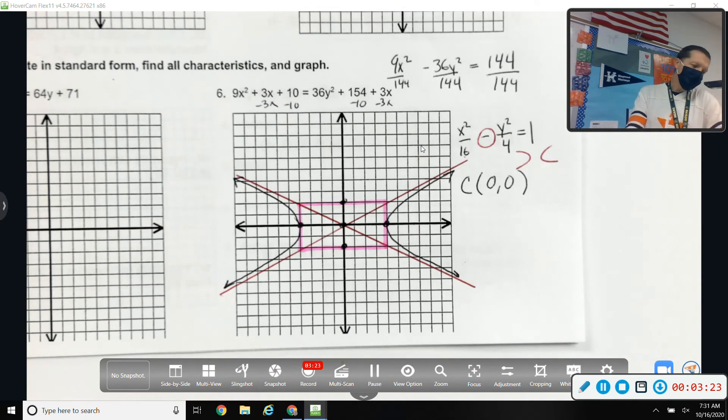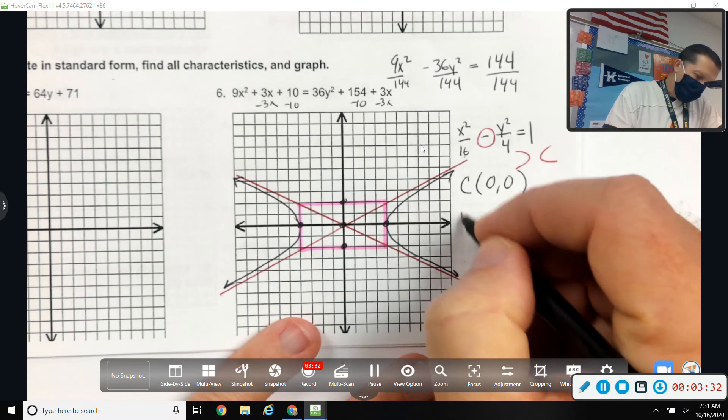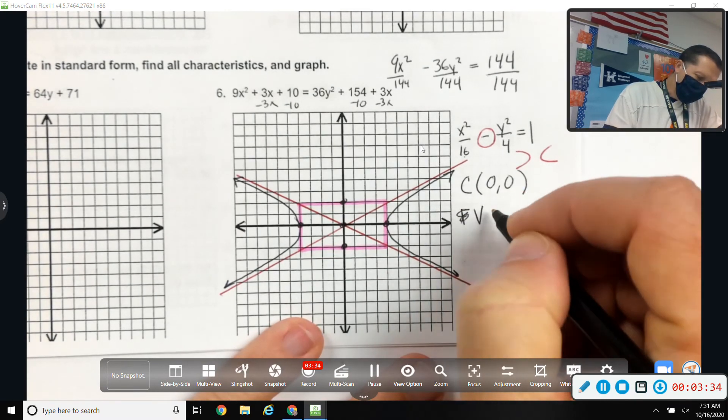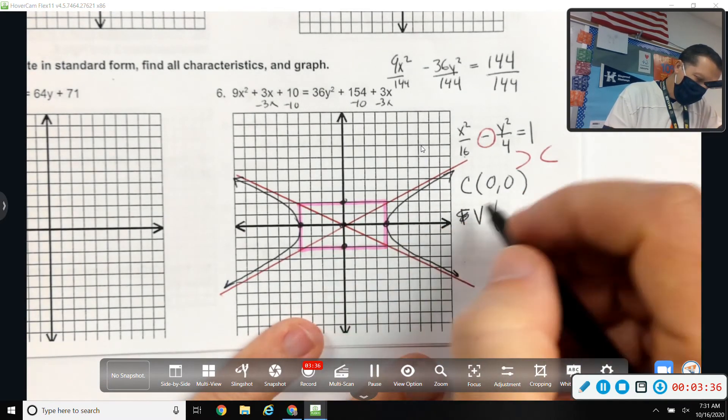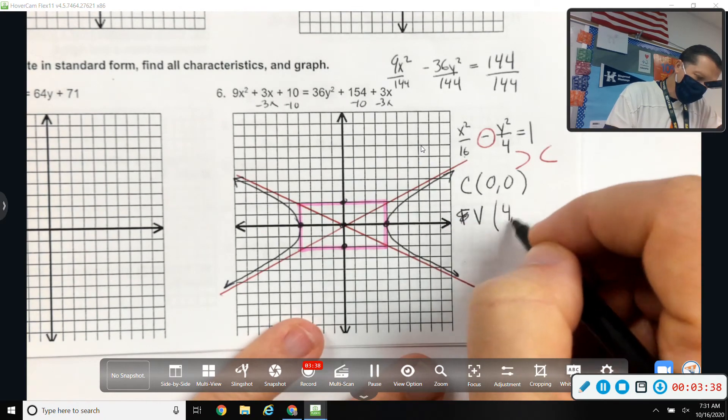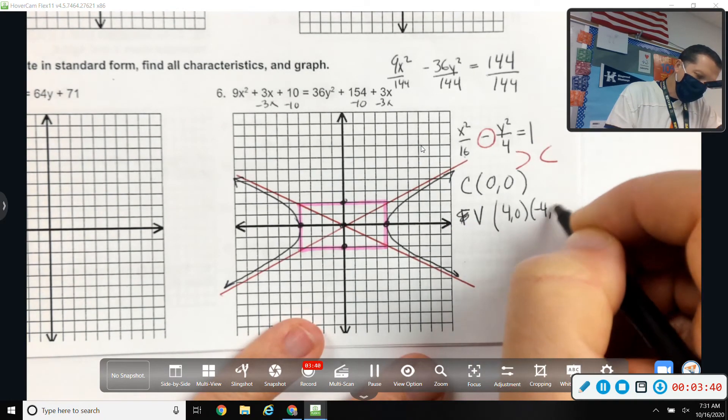It says, find all characteristics. I think because it doesn't specify what they are because some of these graphs are circles and some are ellipses and some are hyperbolas. So, the vertices would be at 4, 0 and negative 4, 0.